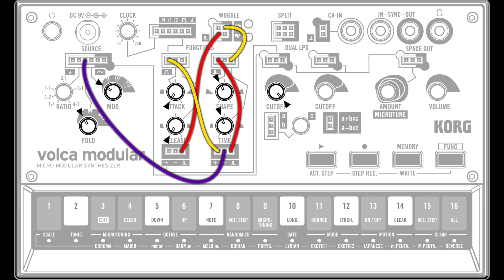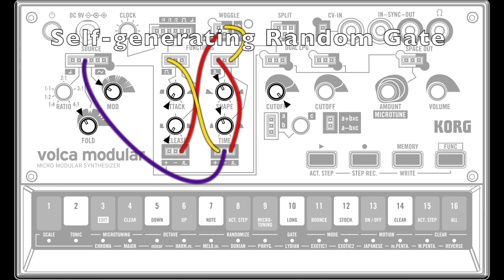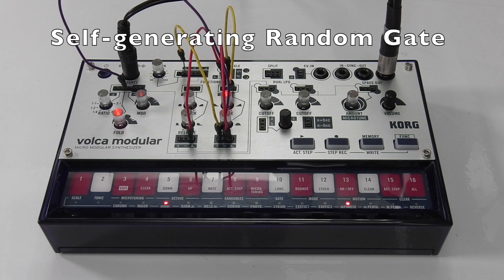To make the sound more interesting, the Function 2 inverted output is sent to the source fold input, which causes the fold amount to rise and fall with each note. You can change the pitch by playing the keyboard.